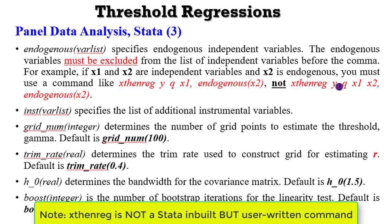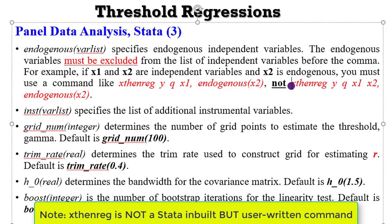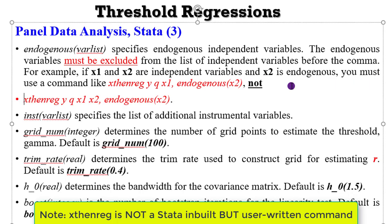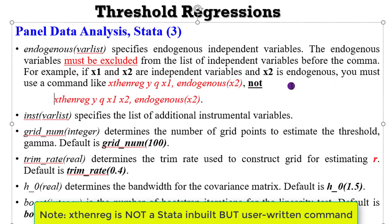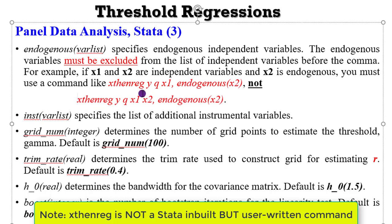This is not the right way to specify — this is very wrong. Do not specify it this way. You can see that having X2 listed as both exogenous and endogenous simultaneously is very wrong. This is the correct way to specify whenever you have an endogenous variable.